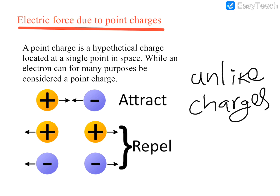This positive charge and this negative charge are unlike charges, placed some distance apart. Because they are unlike charges, the positive charge will attract the negative charge towards it, and the negative charge will attract the positive charge towards it. This is represented by arrows — arrows give the direction of force. Since it is attraction, the positive moves towards the negative and the negative moves towards the positive.